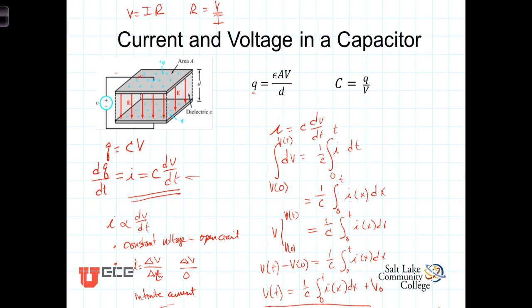This then becomes our second formula. It says that we can determine the voltage on a capacitor when we know the current — that the voltage starts at our initial voltage and we add up the charge divided by the capacitance, so we're adding voltage to whatever the initial voltage was. This is a mathematical manifestation that voltage doesn't change instantaneously.